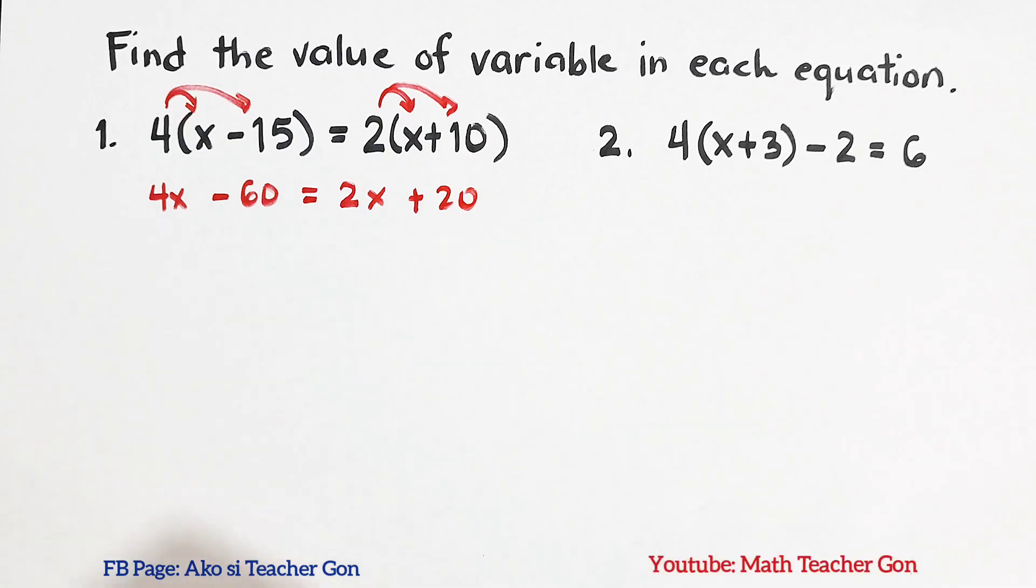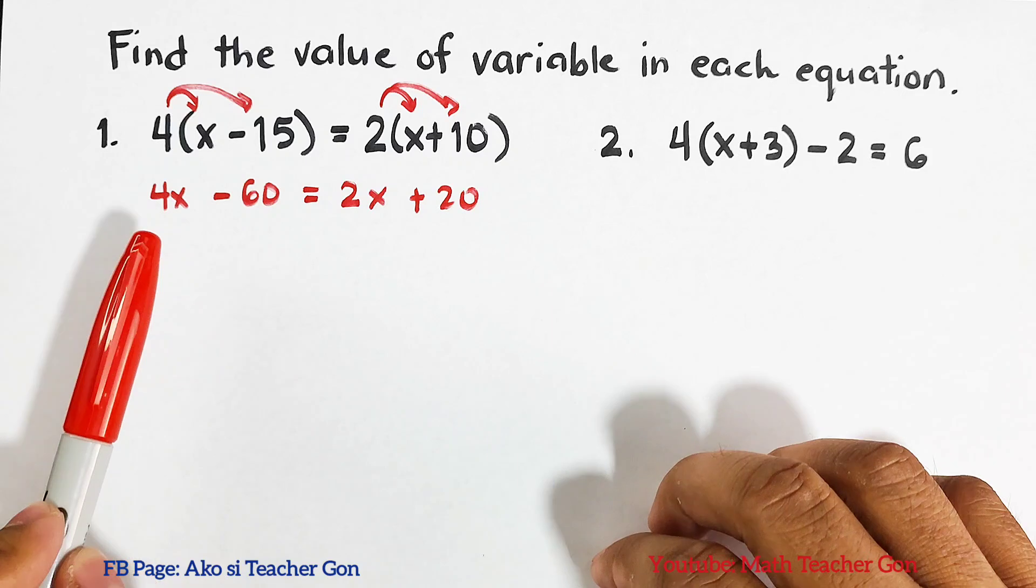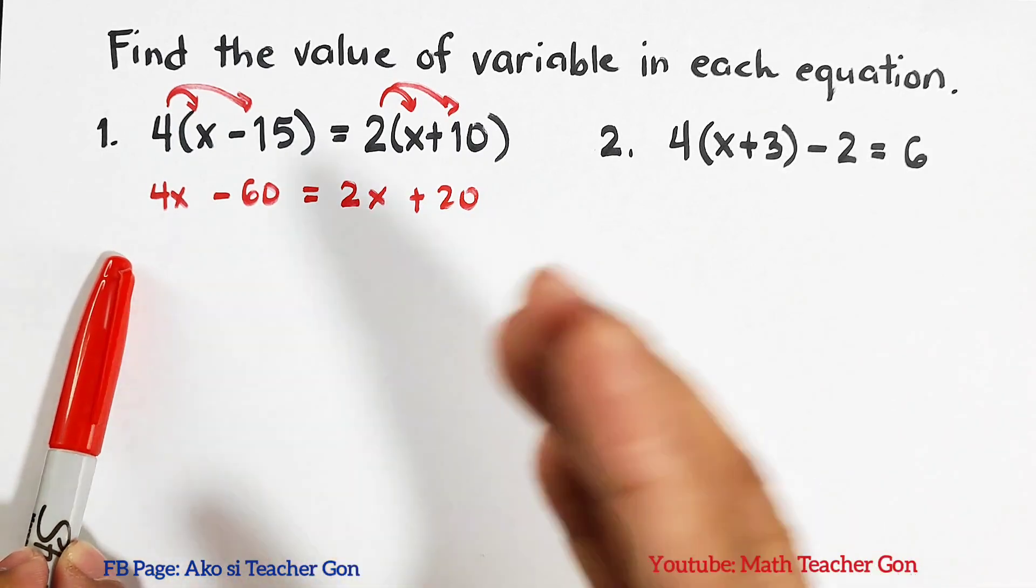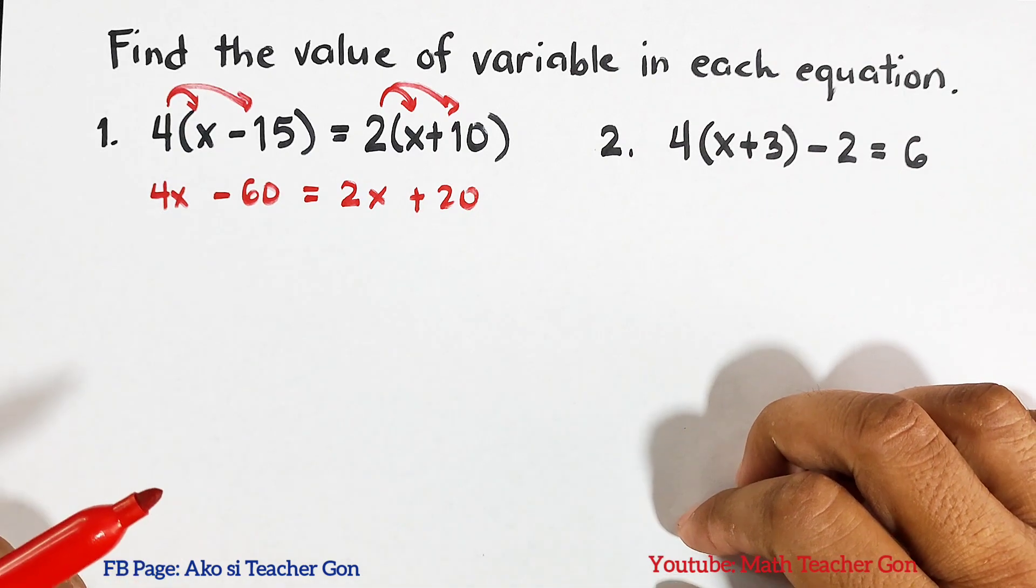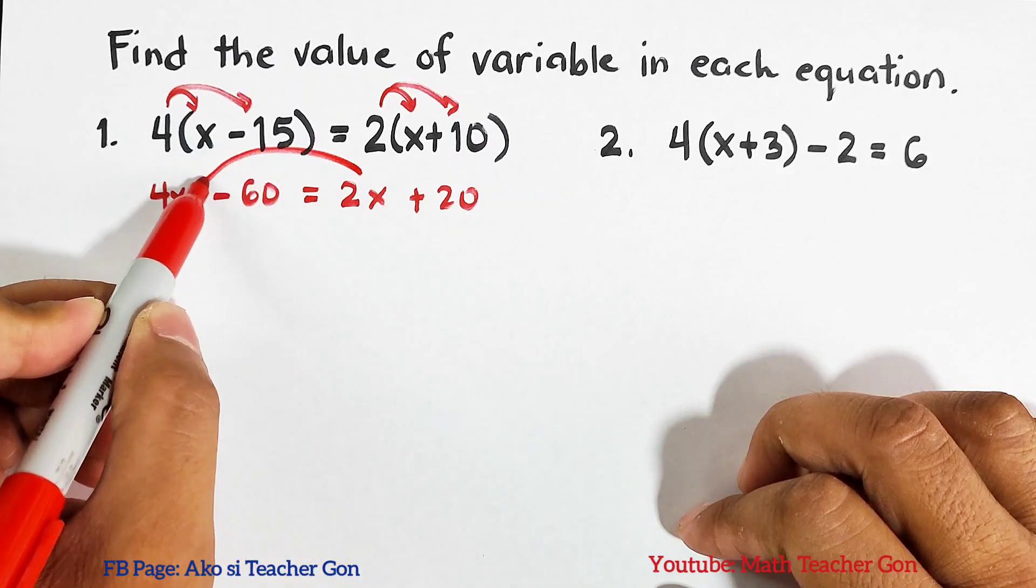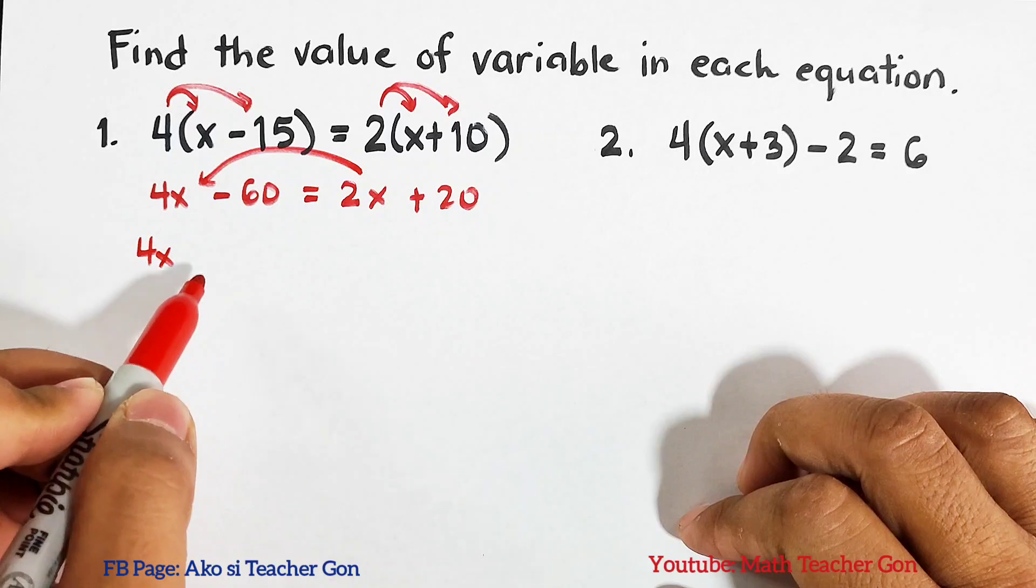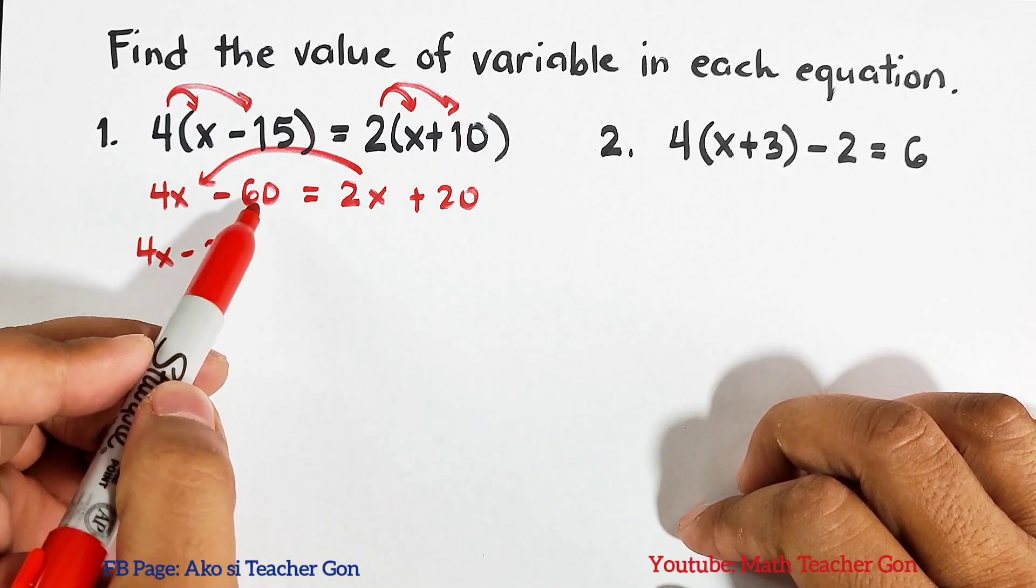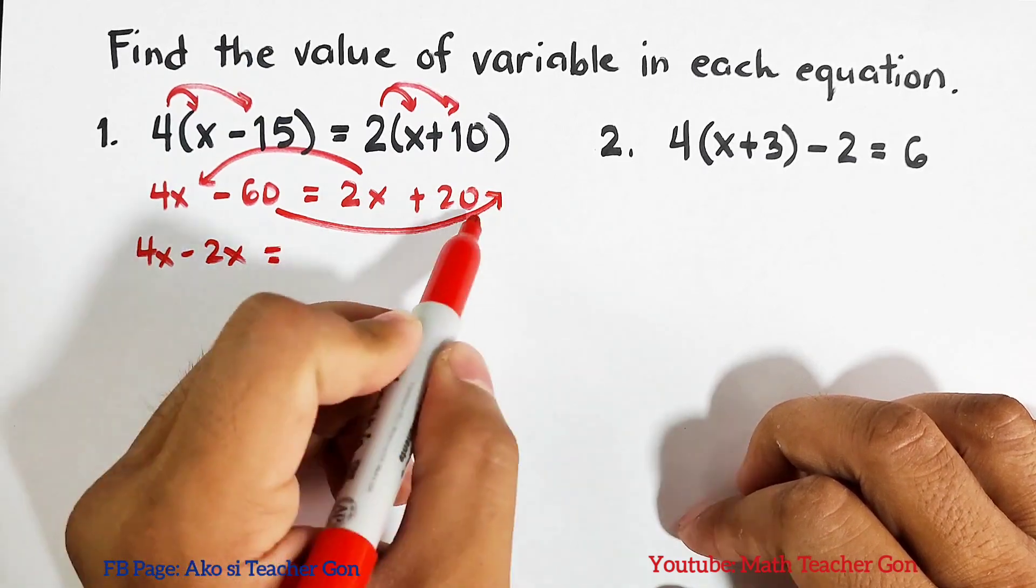So our next step here, as you can see the equation, we have a variable here and on the other side we need to isolate the variables on the left side and the constants on the right side of the equation. First we will eliminate, or we will just use transposition. I will transpose 2x to the other side, it will become 4x minus 2x. And as for negative 60, I will transpose it to the other side, this is equal to 20, then from minus 60 it will become plus 60.